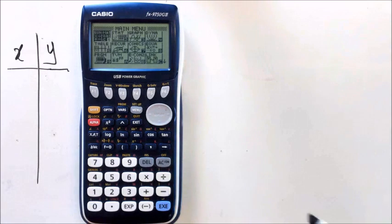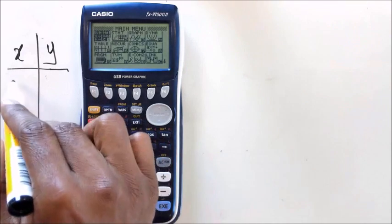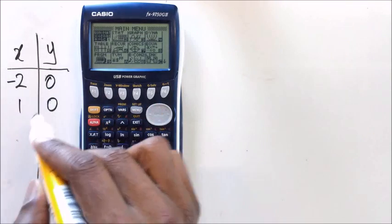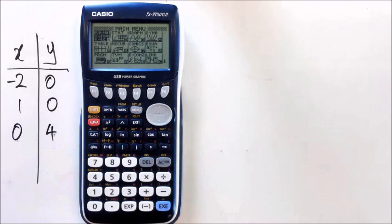Alright, so let's say I've got a few points to work with here. So I've got negative 2, 0, 1, 0, and 0, 4.